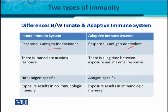The next difference is the time of response. There is an immediate maximal response in the case of the innate immune system. While in the adaptive immune system, there is a lag time between the exposure and the maximal response. When exposure happens and then the immune response comes, that delay is called the lag time. So in the adaptive immune system, there is a lag time before maximum response, while the innate immune system has no such lag time.